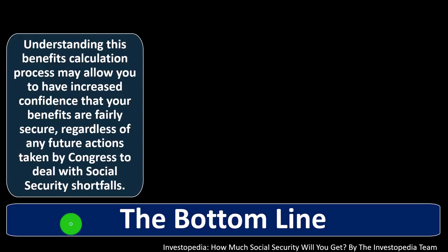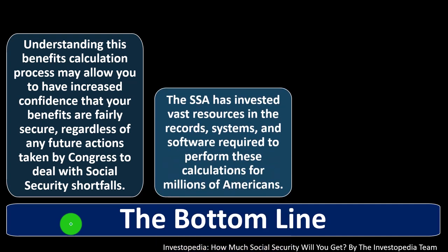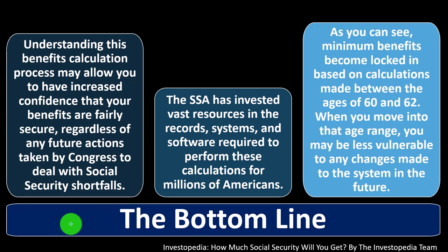What's the bottom line? Understanding this benefits calculation process may allow you to have increased confidence that your benefits are fairly secure, regardless of any future actions taken by Congress to deal with Social Security shortfalls. Clearly the laws could change going forward because it's a lot of money. The SSA has invested vast resources in the record system and software required to perform these calculations for millions of Americans. Minimum benefits become locked in based on calculations made between the ages of 60 and 62. When you move into that age range, you may be less vulnerable to any changes made to the system in the future — meaning if you're closer to retirement, it's less likely they're going to pull the rug out from under you.